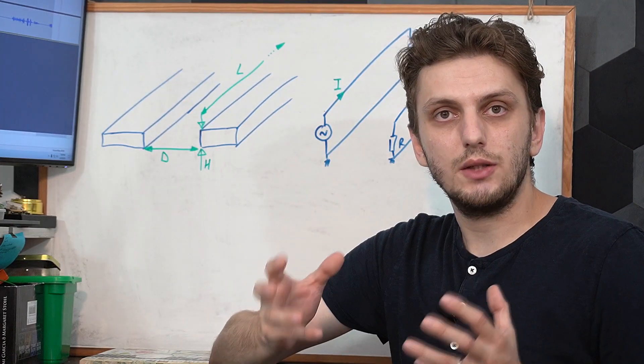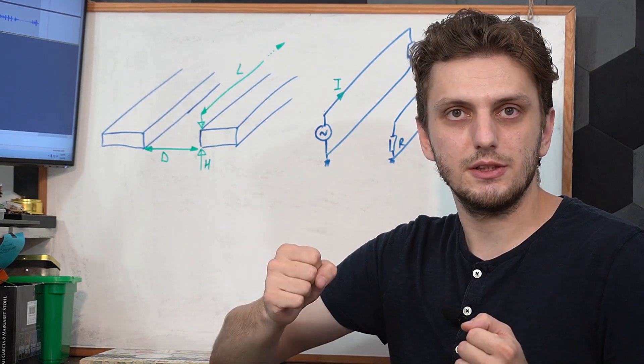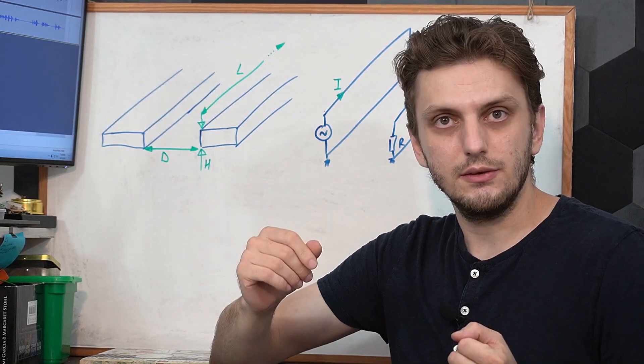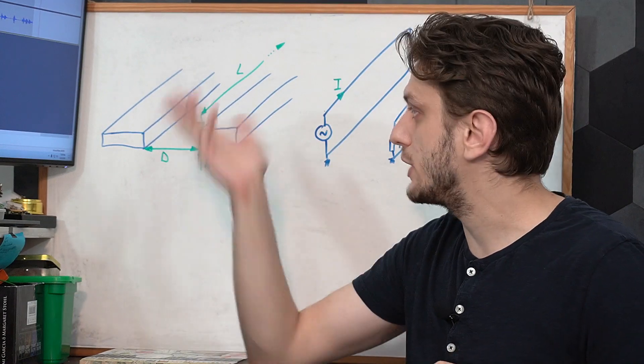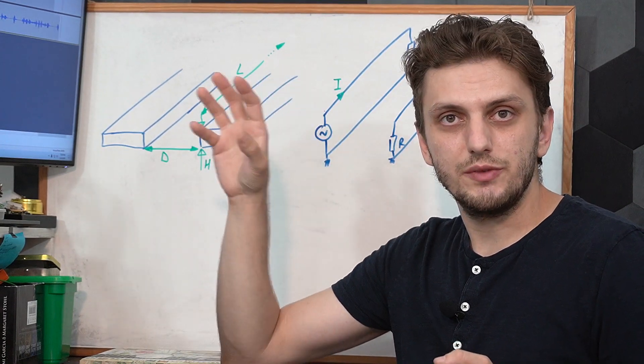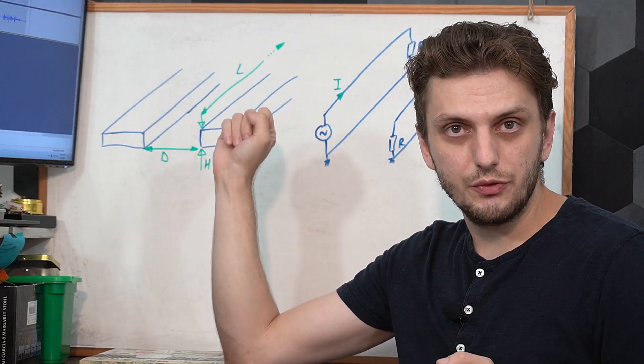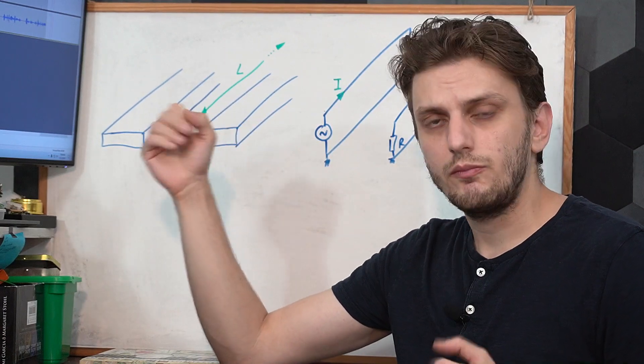So some of the signal will couple through magnetic fields. And basically this is how crosstalk works. If you have high impedance traces, like we have in our case, so we have quite large resistors, most of the coupling is happening through electric fields, through capacitive coupling.